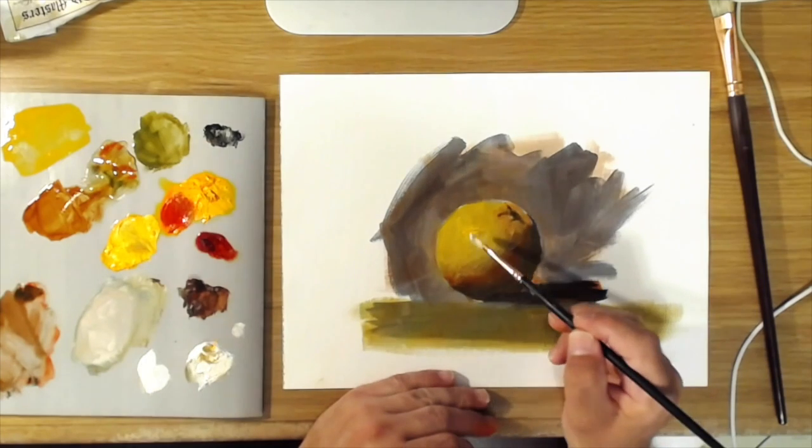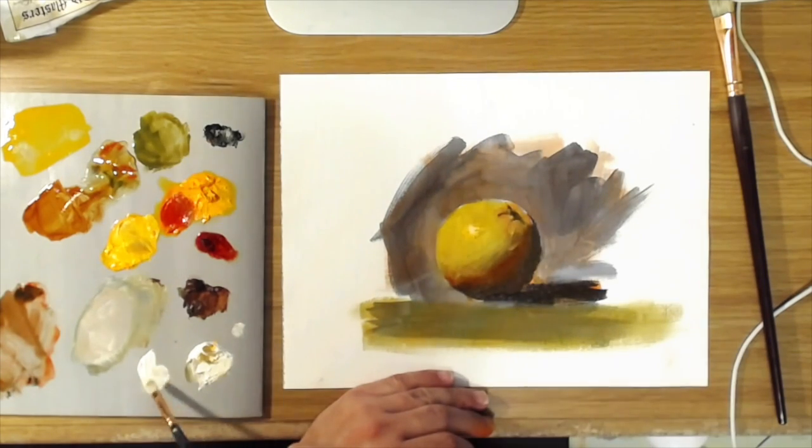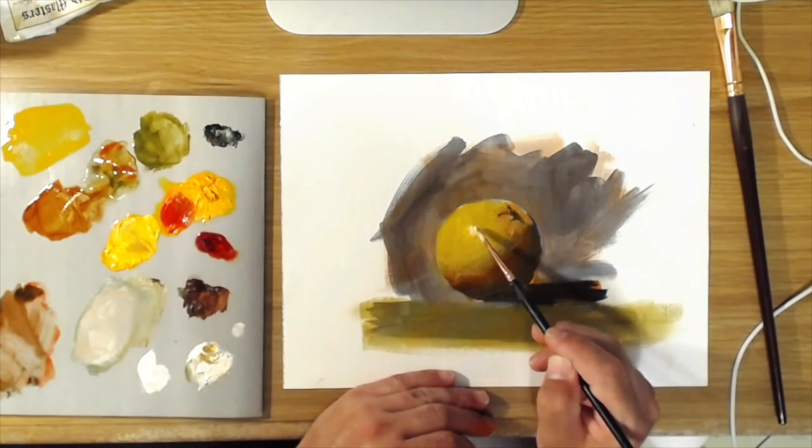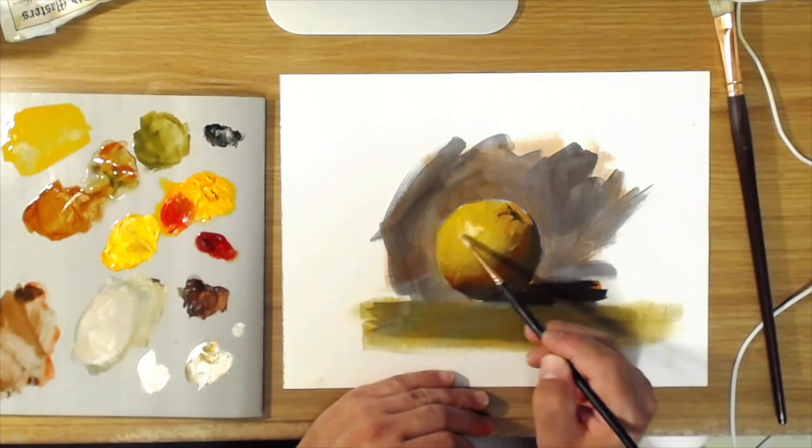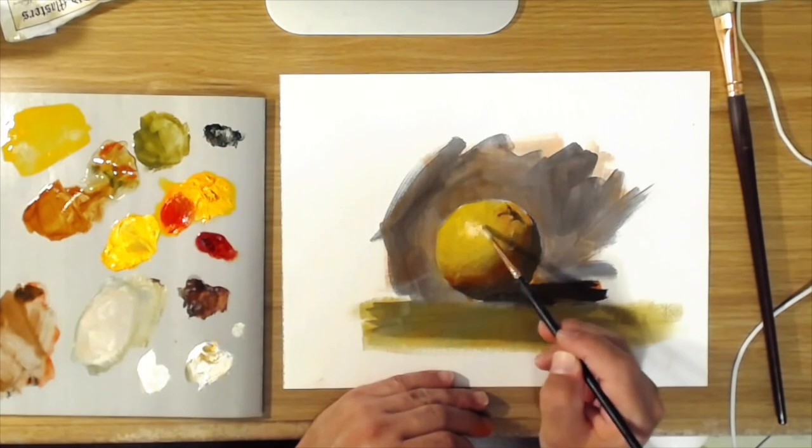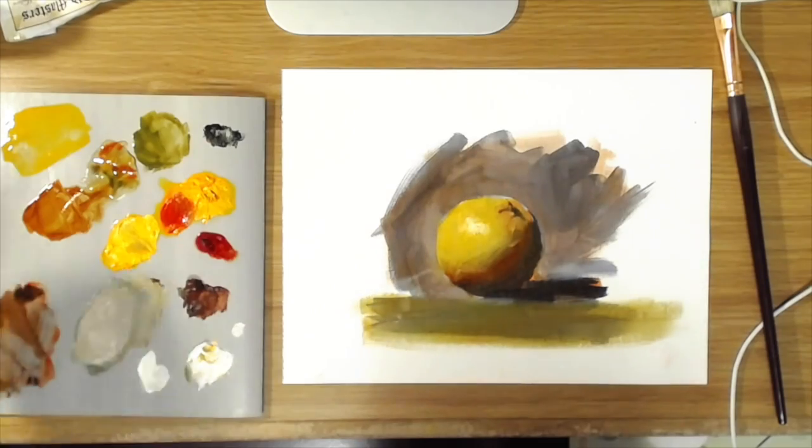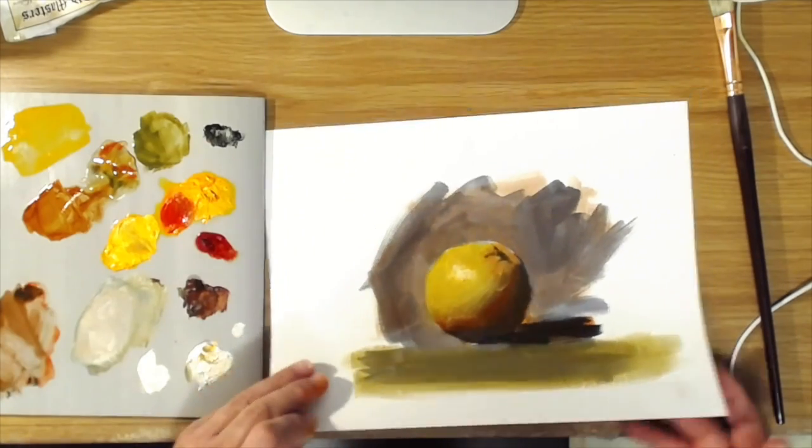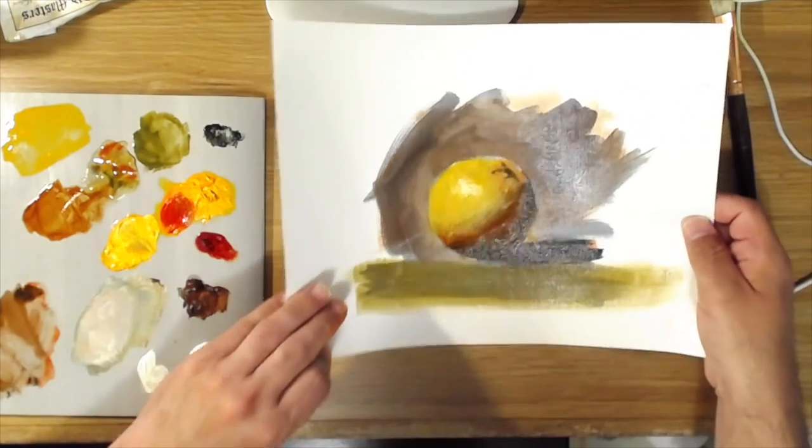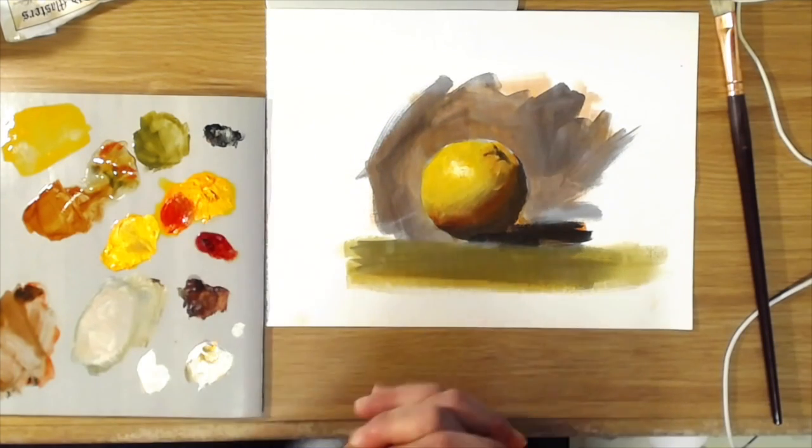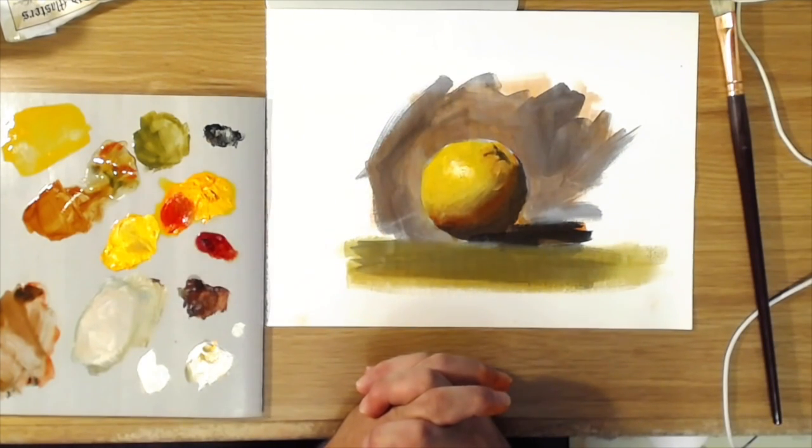And put the highlight in just to make the highlight stand out a little bit more. Now you've got that opaque highlight sitting on top of the transparent glaze, and it gives it a little bit of a look of light more so than the glaze highlight. So that's a basic, very basic and quick demonstration of how the two methods work.